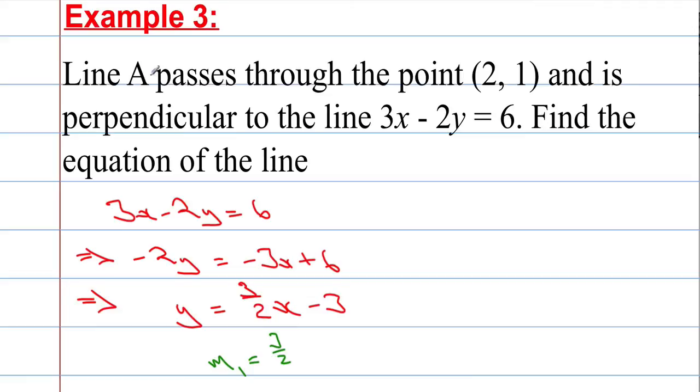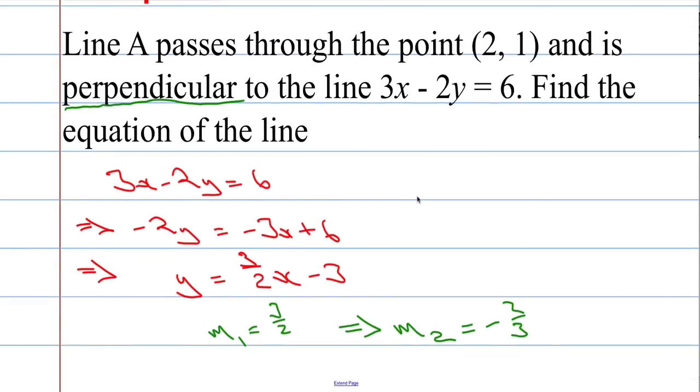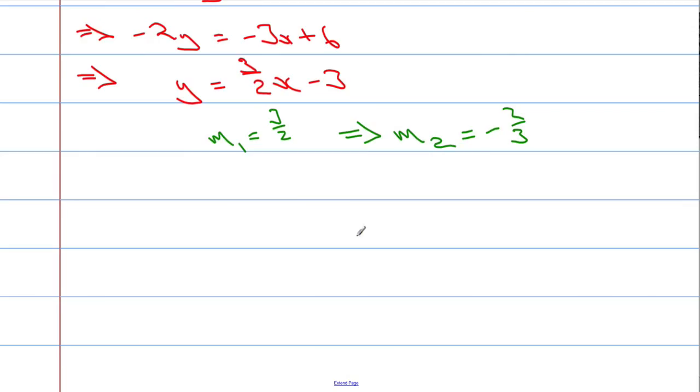Now if the two lines are perpendicular, that means that the line that we're looking for, the gradient must be the negative reciprocal, because they're perpendicular. We can use that fact. So m₂, I'm going to flip it upside down, change the sign, negative 2 over 3. So m₂ is negative 2 over 3. I have the gradient, I have a point. Now what we're going to do is use the point-slope method.